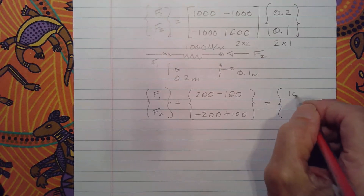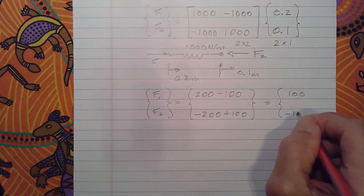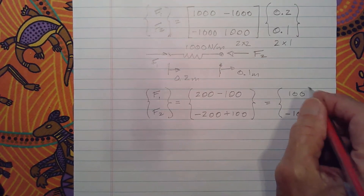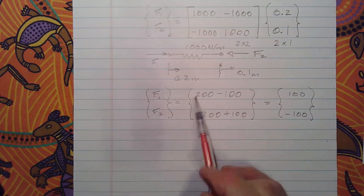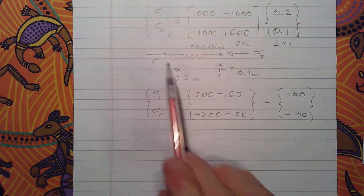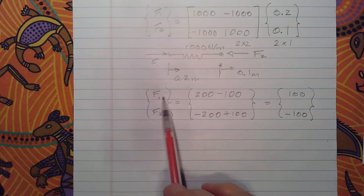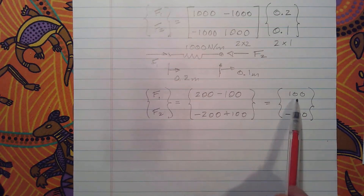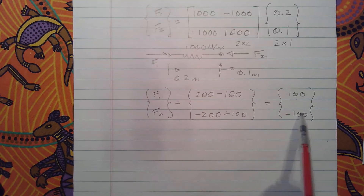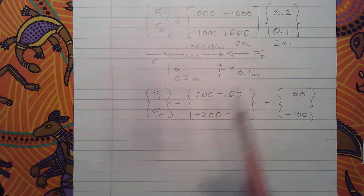So F1 is 100 and F2 is minus 100. F1 is positive because it's pointing to the right, and F2 is negative because it's pointing to the left — our formulation automatically took care of that.